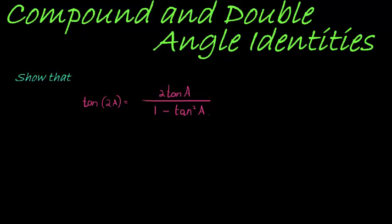In this question we are asked to prove that tan of 2A is equal to 2 tan A over 1 minus tan squared A.